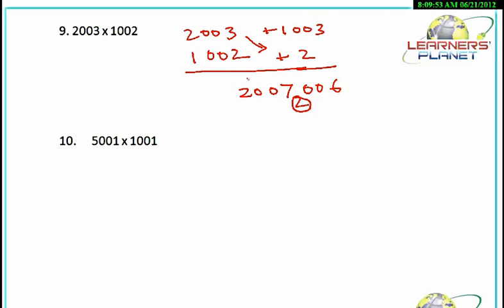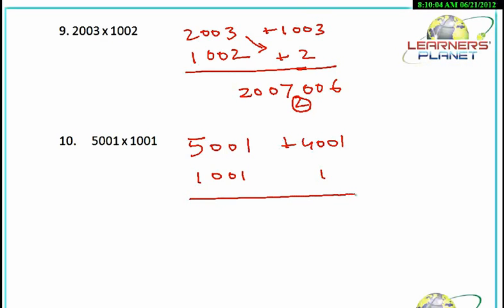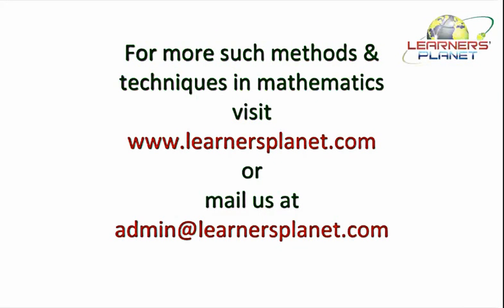Now in this case, 5001 into 1001: it is 4001 more than 1000 and 1 more than 1000. With this multiplication we get 4001; we write 001 and carry the 4. Then 5001 plus 1 is 5002, plus the carried 4, giving us 5006. The calculation is again very simple and very fast!